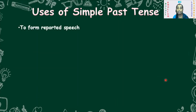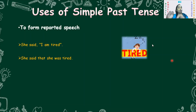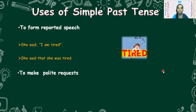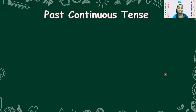Another use of simple past tense is to form reported speech. For example, direct speech: 'She said, I am tired.' Indirect speech: 'She said that she was tired.' Present tense 'am' is converted to past tense 'was.' The girl in the picture is very exhausted and tired. Simple past is also used to make polite requests — for example: 'I wanted to drive your bicycle.' Here 'wanted' is again the V2 form.